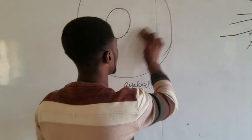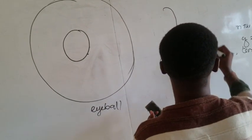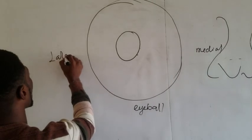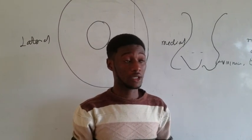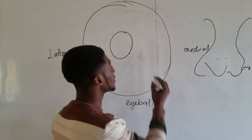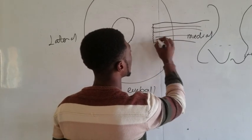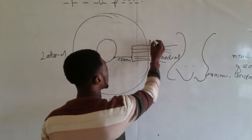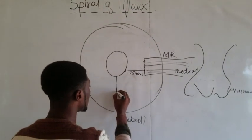We know that the rectus muscles insert at the anterior aspect of the globe. The distance between the corneoscleral junction and the medial rectus is 5.5 mm. So the medial rectus muscle inserts somewhere here, and the distance between them is 5.5 mm. When you come to the inferior rectus, it's 6.5 mm, so it inserts a little further back.